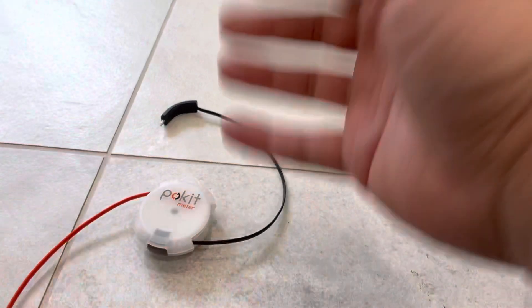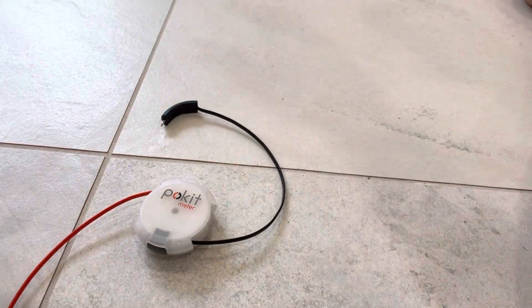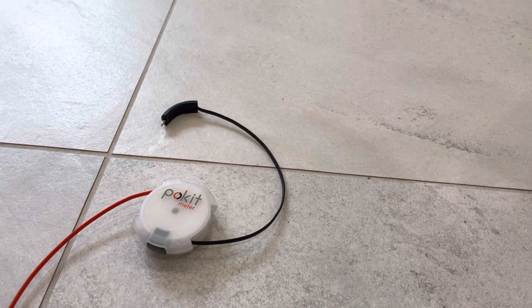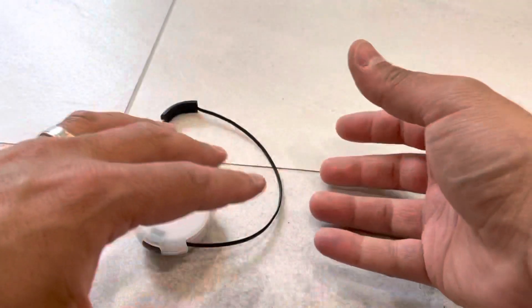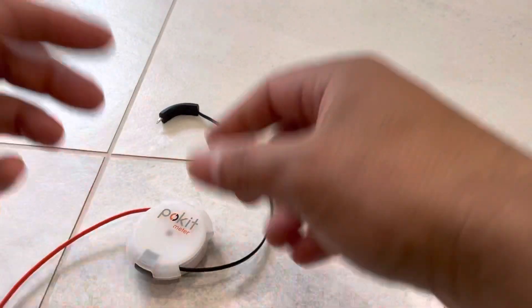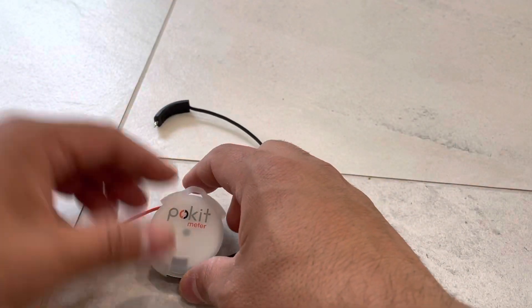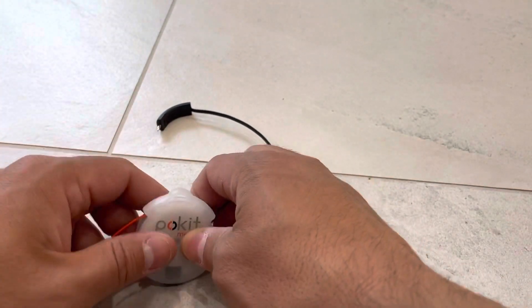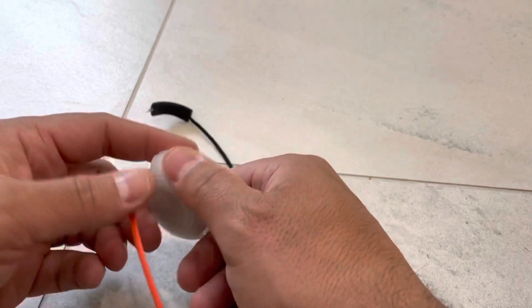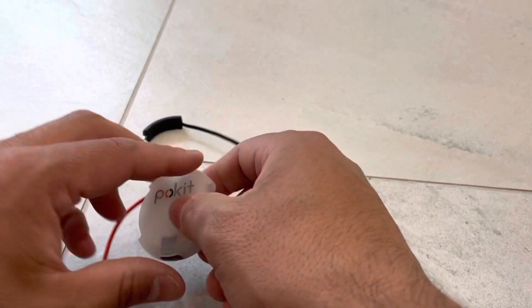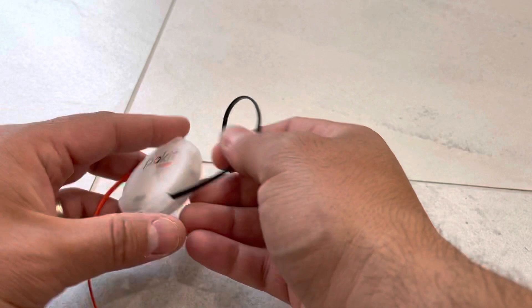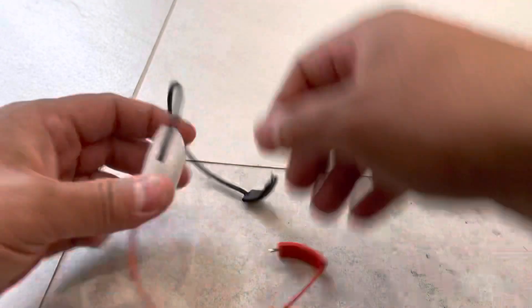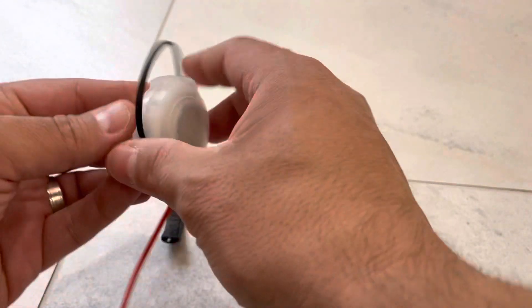It basically uses Bluetooth Low Energy to connect to your phone. So it's constantly searching for a device to connect to. It's cool because there's no on and off switch, it just constantly searches for a device and then you pair it up to the app and it's really easy to use. Now there's actually a battery here.